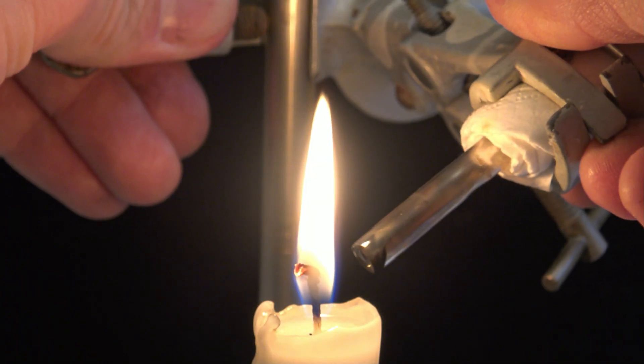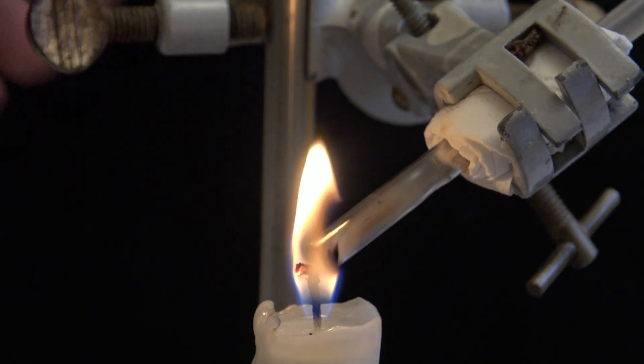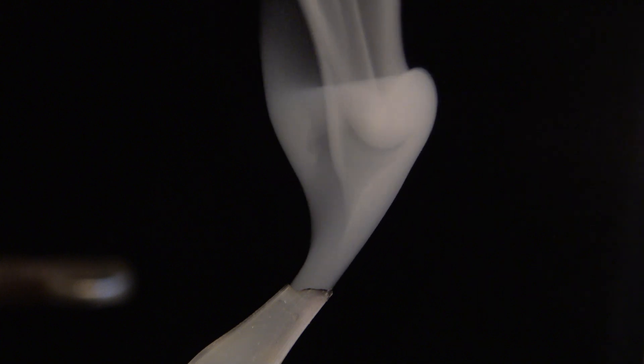When a glass tube is held into the flame, the white wax vapors rise in it, and it can be lit again so that two flames are present now.